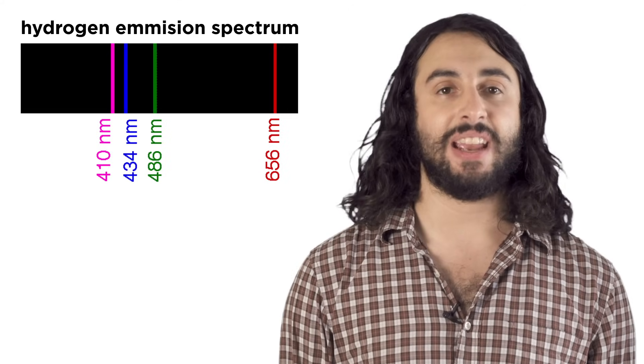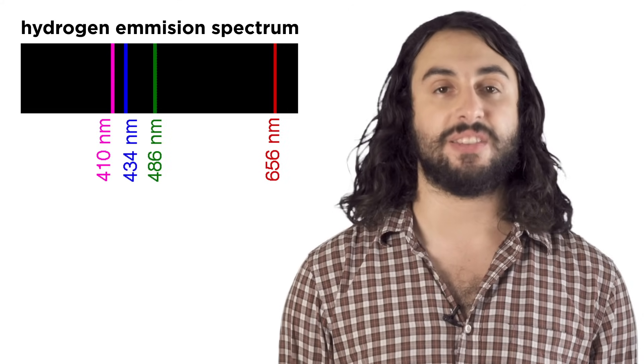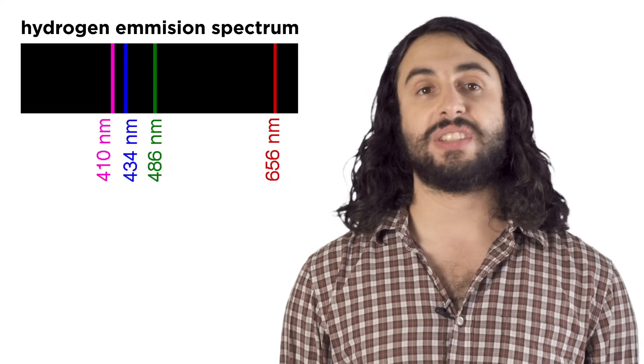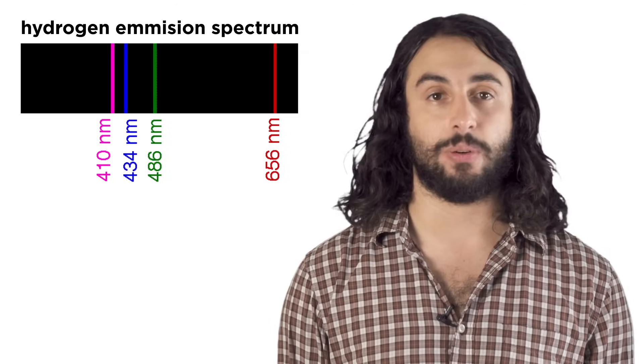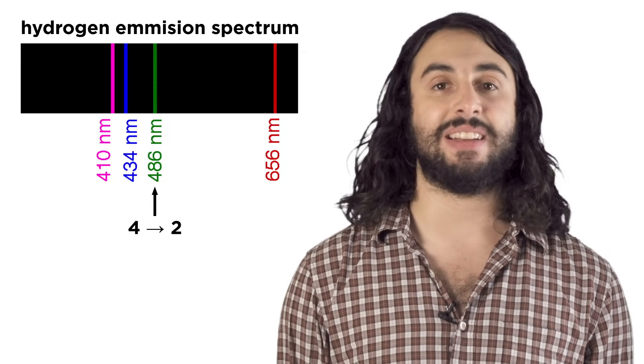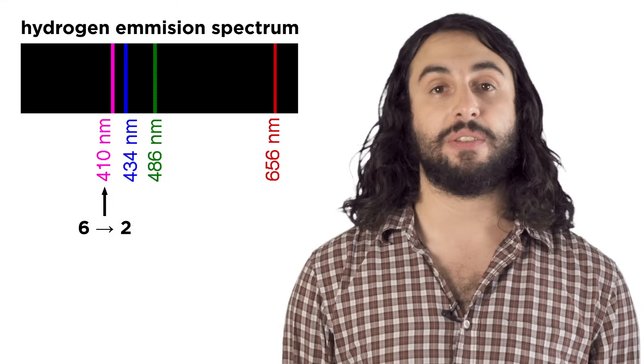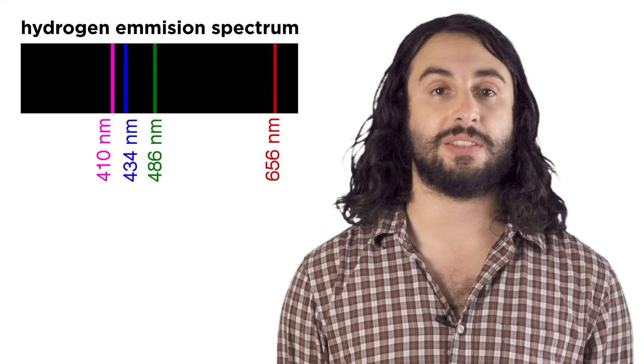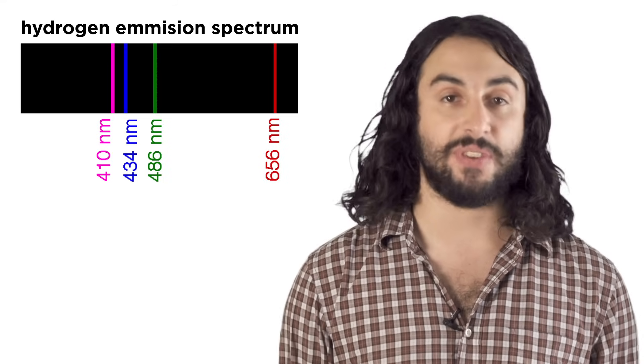The Balmer series happens to contain transitions that generate photons of visible light. These are the ones found on hydrogen's emission spectrum. These lines correspond to the electron's transitions that end at n equals two and the resulting photon that transition emits which just happens to fall in the visible spectrum.